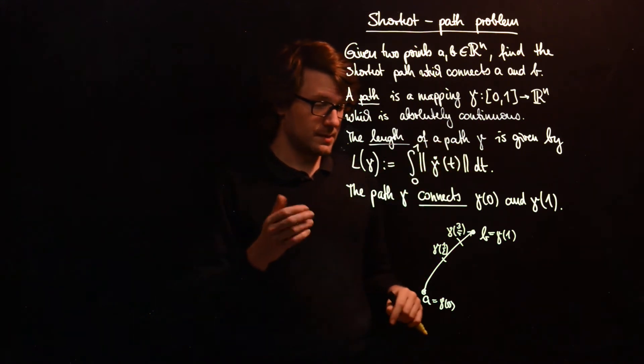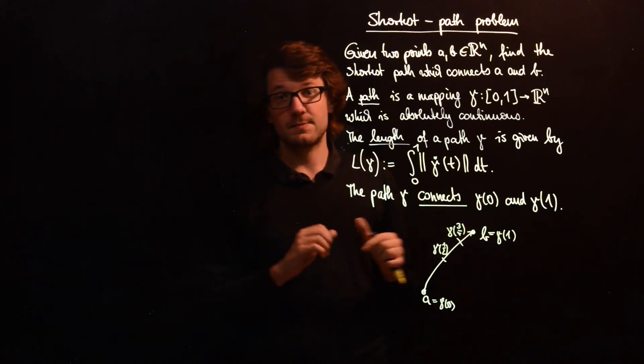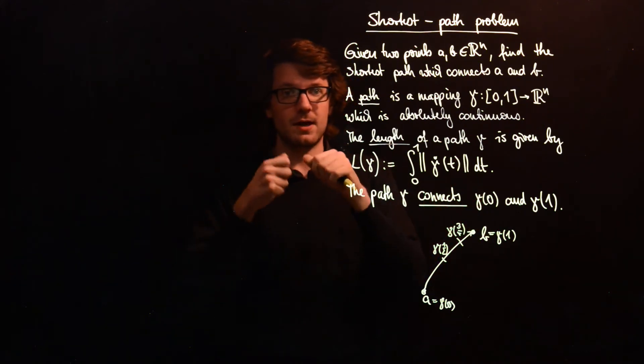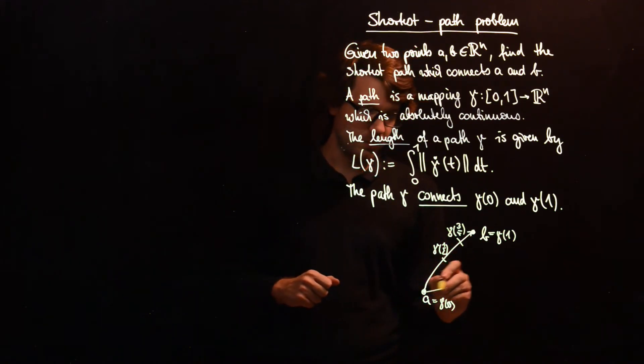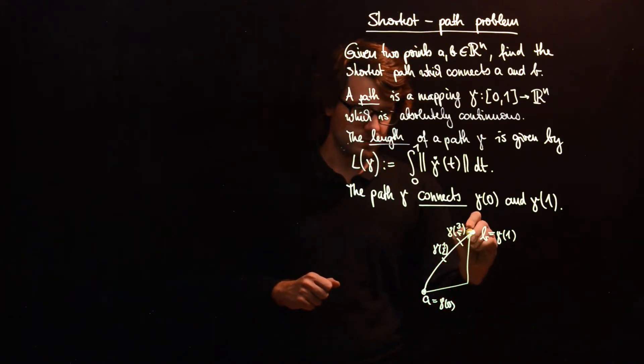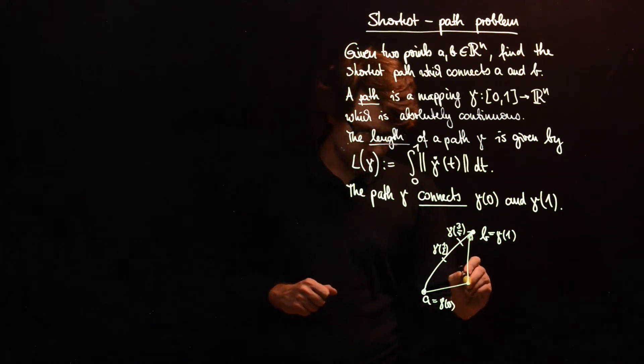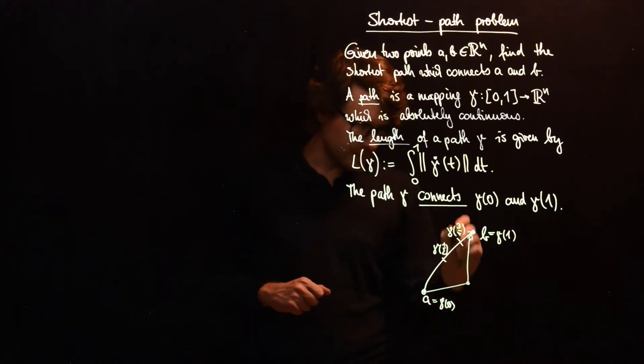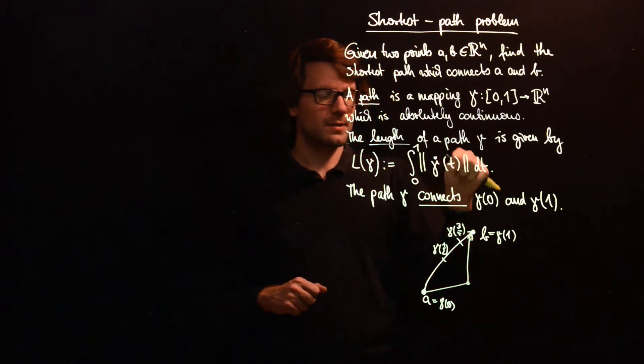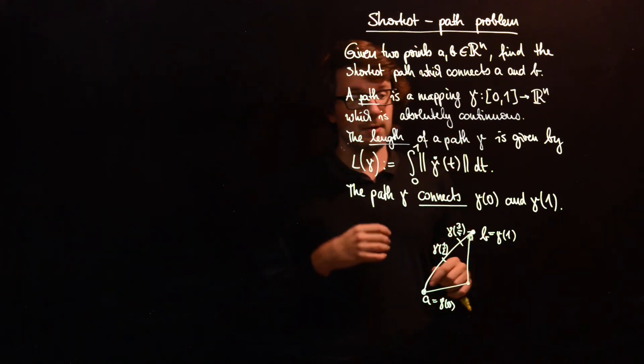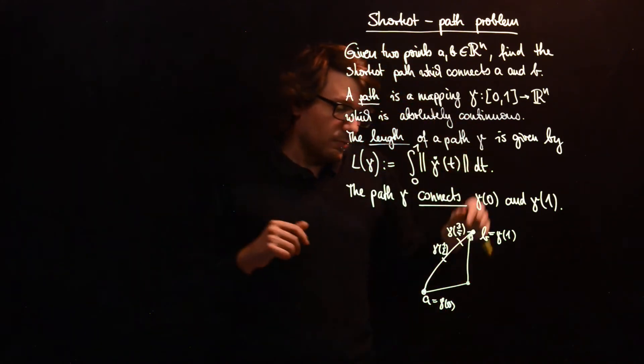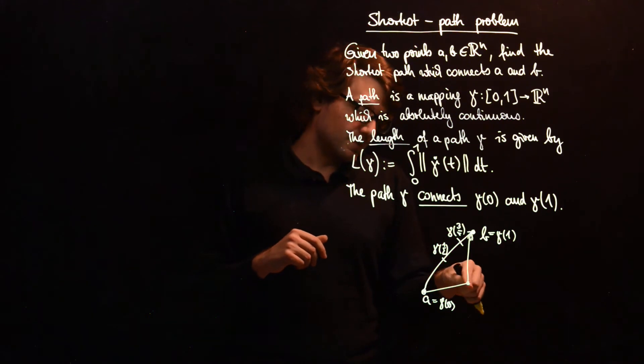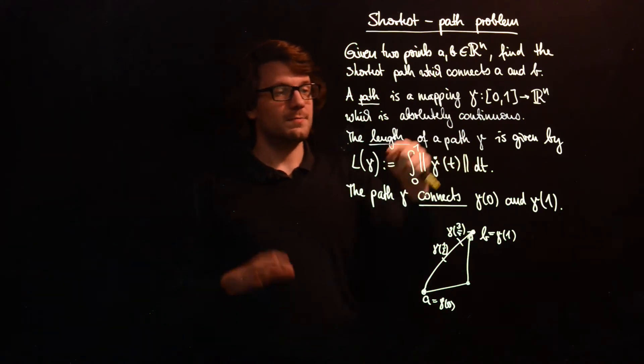And why are we actually choosing absolutely continuous paths, and not just differentiable paths? The reason is that these absolutely continuous paths can also have points where we just turn, so this is also a path. And then, so this thing does not have to exist everywhere, but almost everywhere, so we don't really have to have the speed exactly at this point, we just have to integrate over the speed in general.